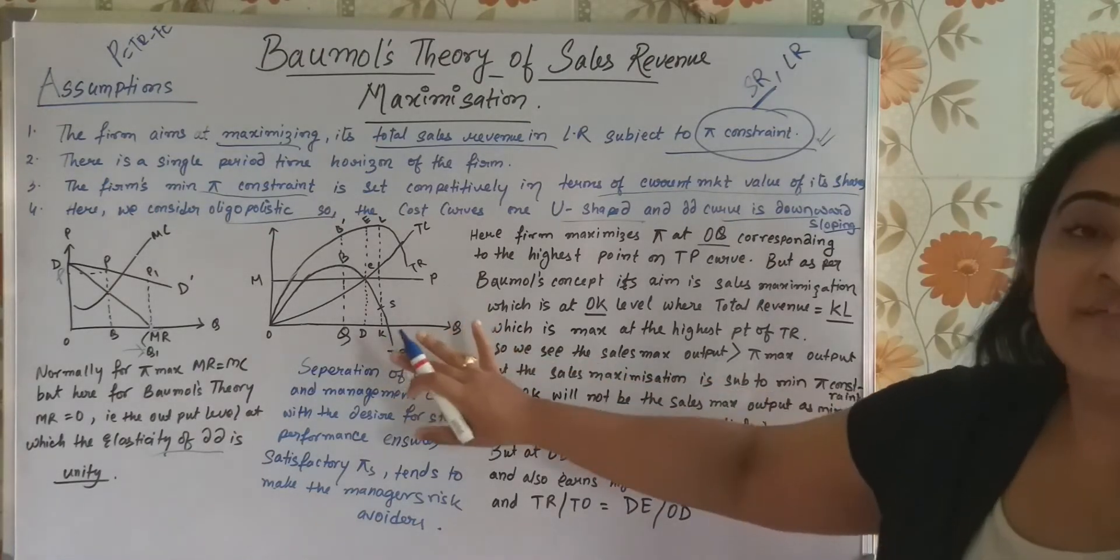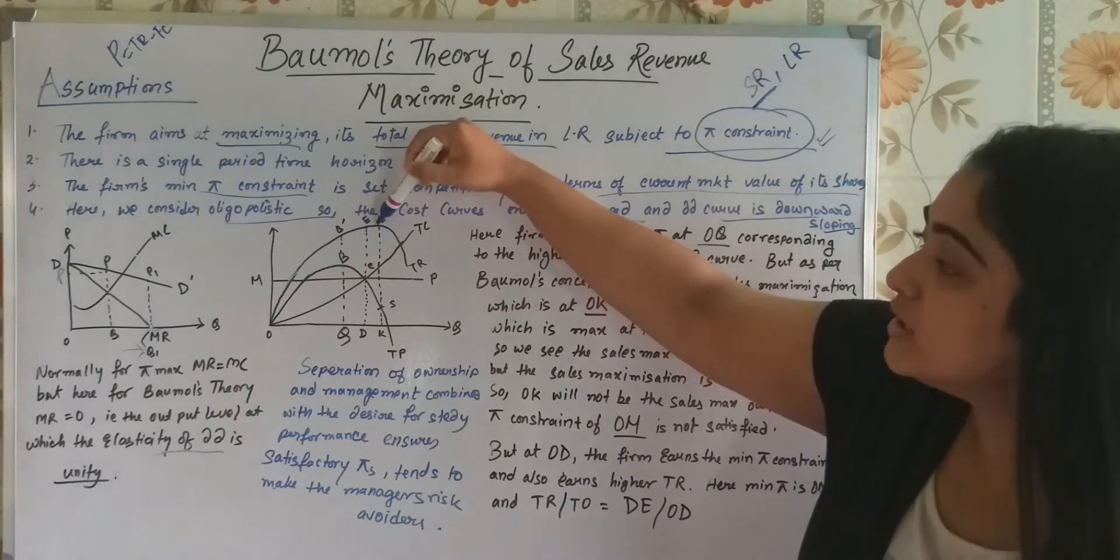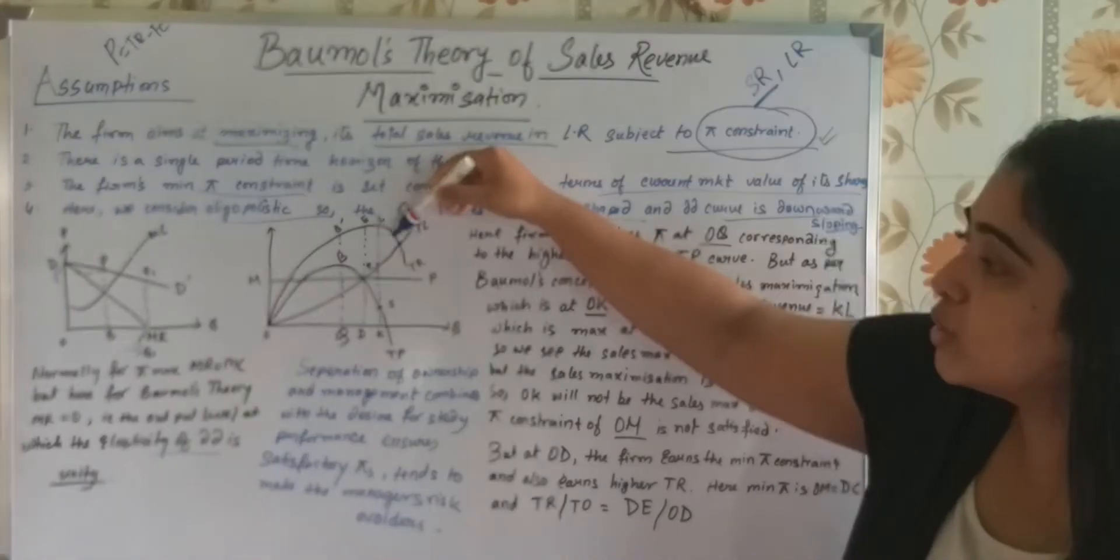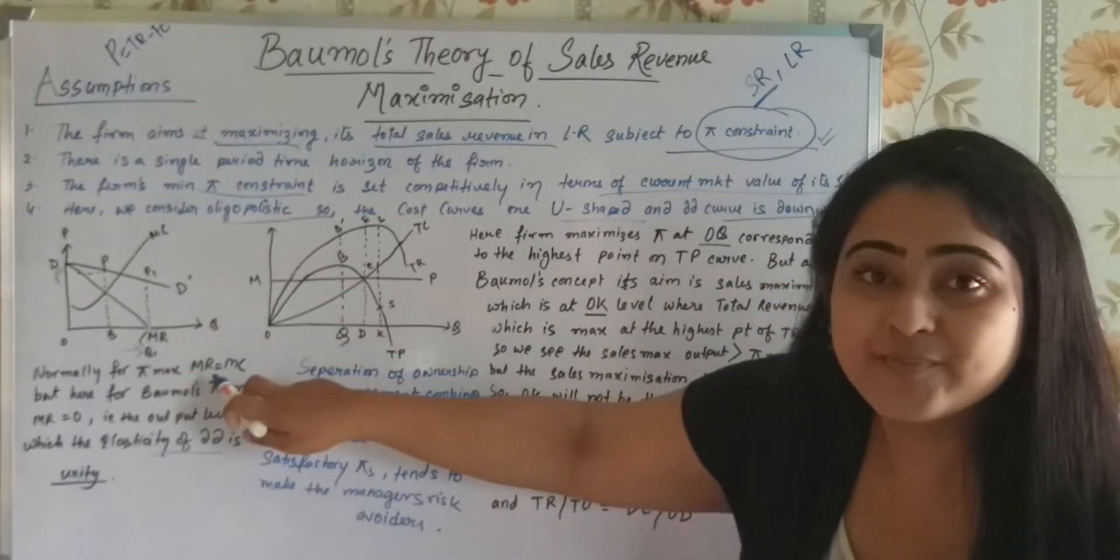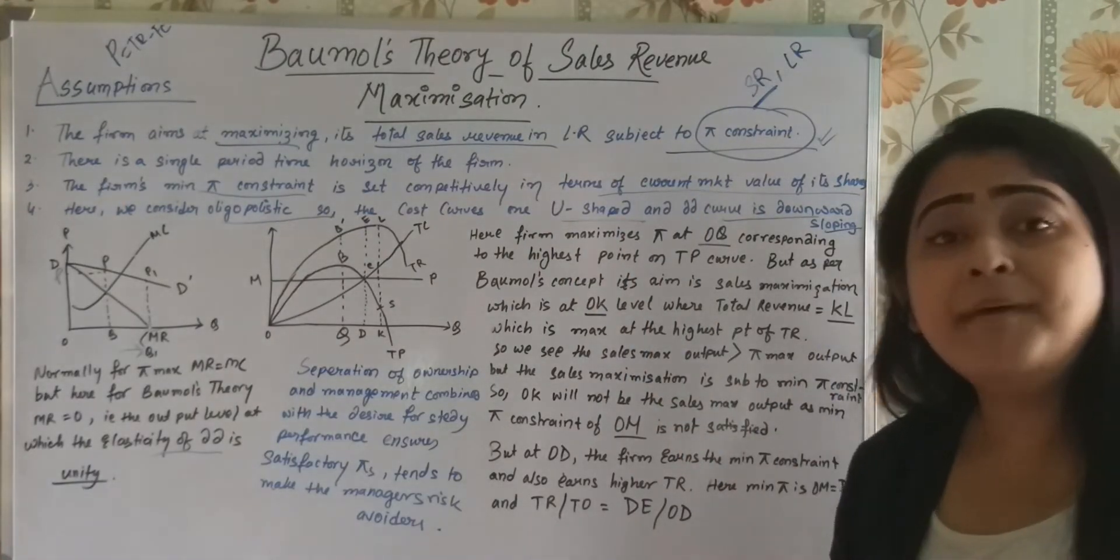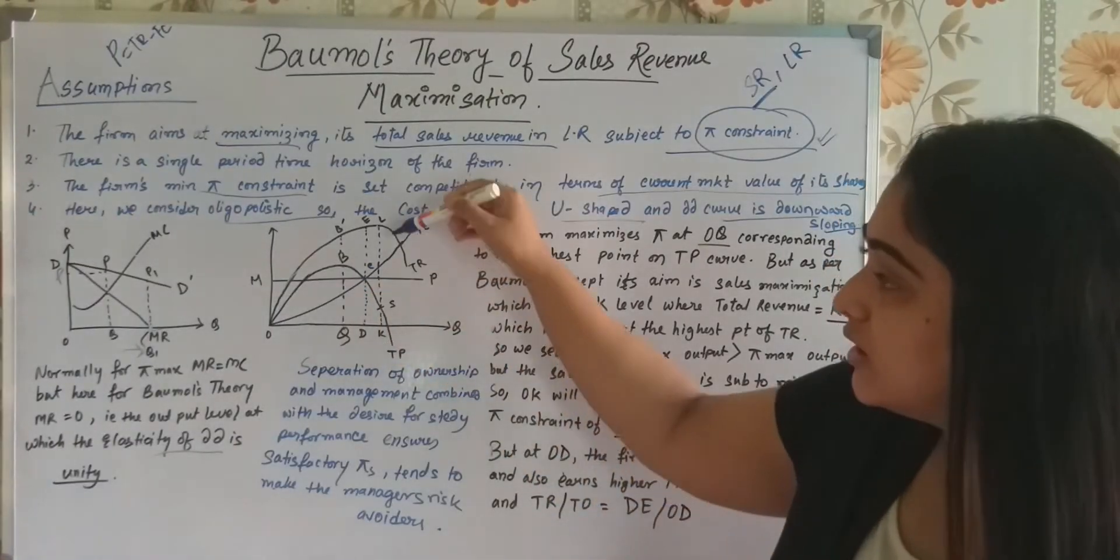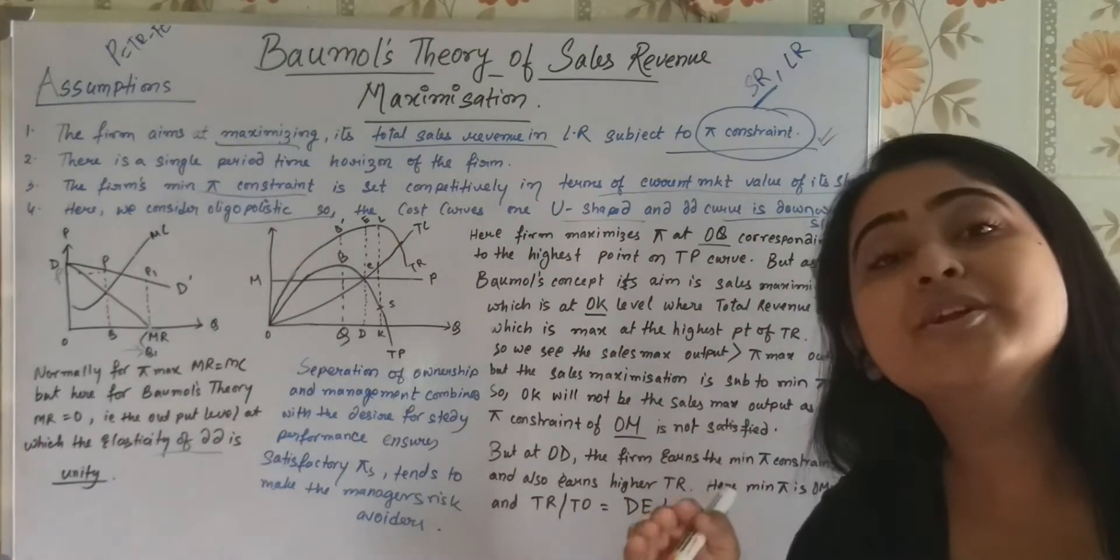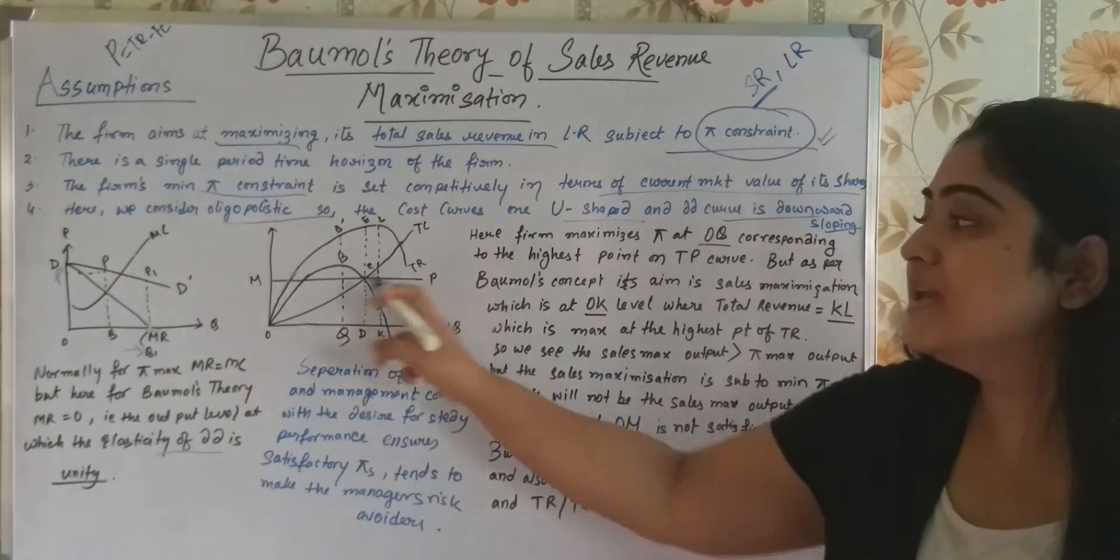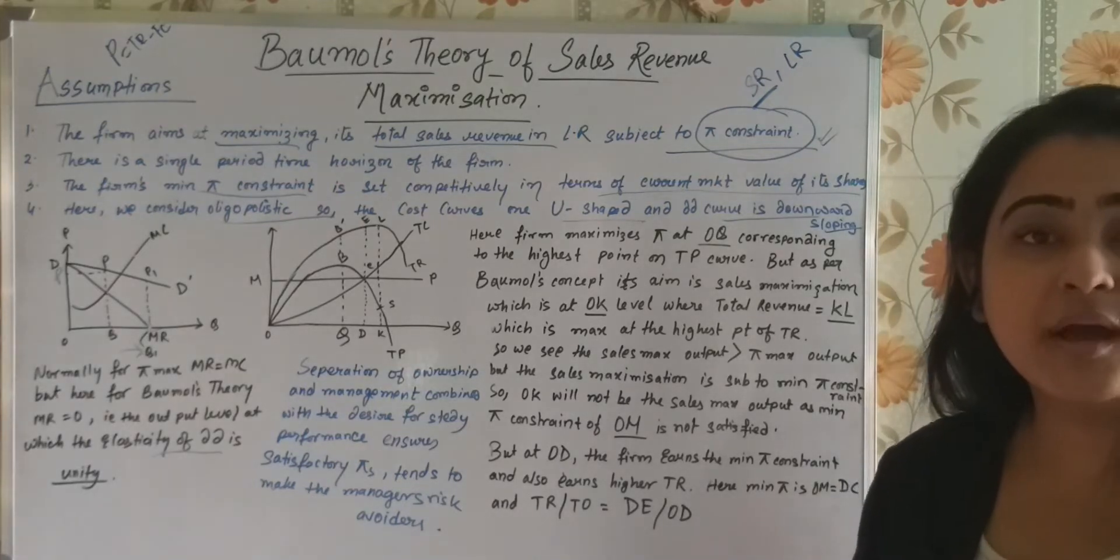Now, let us come to this diagram. This is a very important diagram. You see, TR represents the total revenue. This is the maximum point of the total revenue, right? So till here we will be increasing the output. We will be producing. After this, total revenue is falling means marginal revenue becomes negative. So, produce till where total revenue is maximum. This is the profit maximization level of output. This is the total revenue maximization of output.